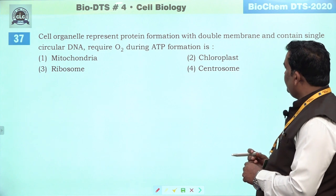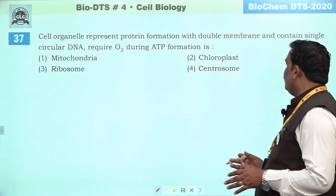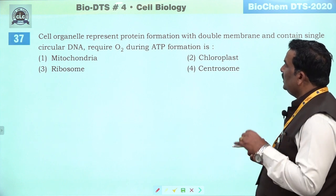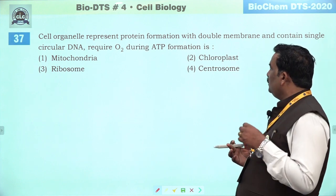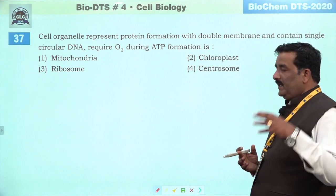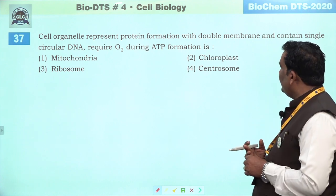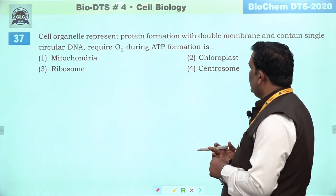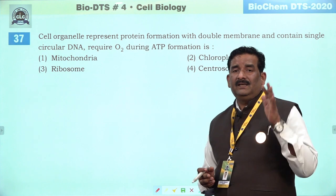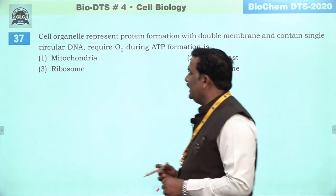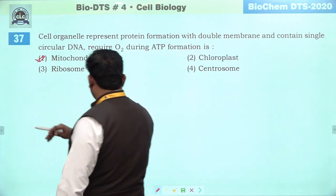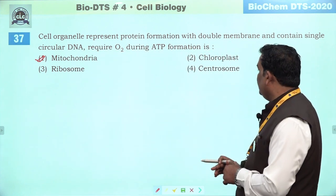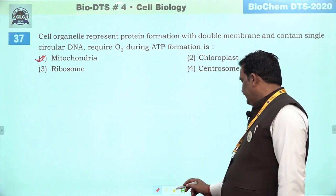Next question: cell organelle represents protein formation with double membrane and contains single circular DNA — require O2 during ATP formation. ATP formation ki daraun O2 ki requirement hoti hai, circular DNA hai, double membranous hai — obviously oxidative phosphorylation yahan ek clue hai jo right answer aapko deta hai mitochondria ke liye. Chloroplast mein light ki requirement hoti hai. First is the right answer.